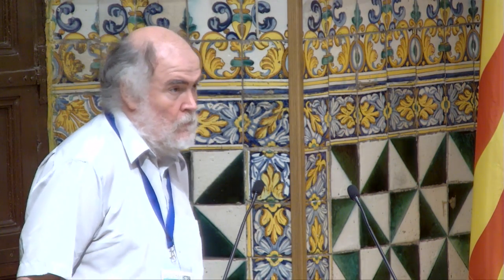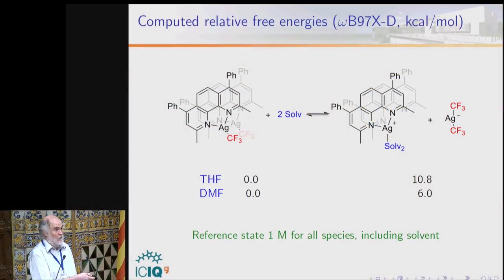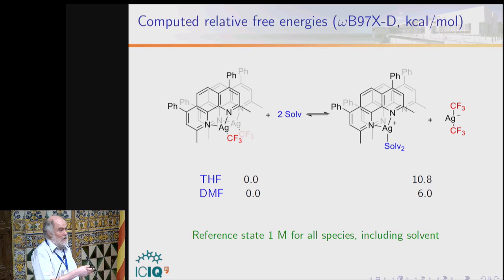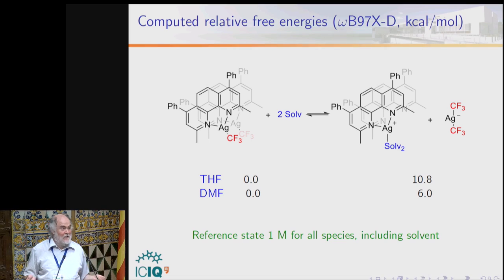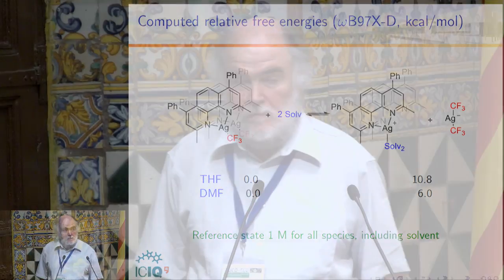Last question: why two solvent molecules in the silver project — not one or three? We did not choose two; it came out from the calculation. We tried up to seven different possible cations, and this was the most stable one in terms of energy. The other possible cations had much higher energies. We also used a cluster of seven solvent molecules to compute the coordination energy of the solvent to the metal. Thank you.